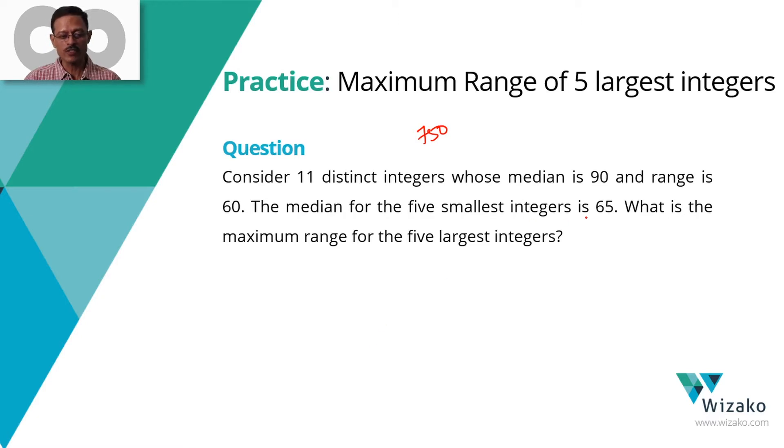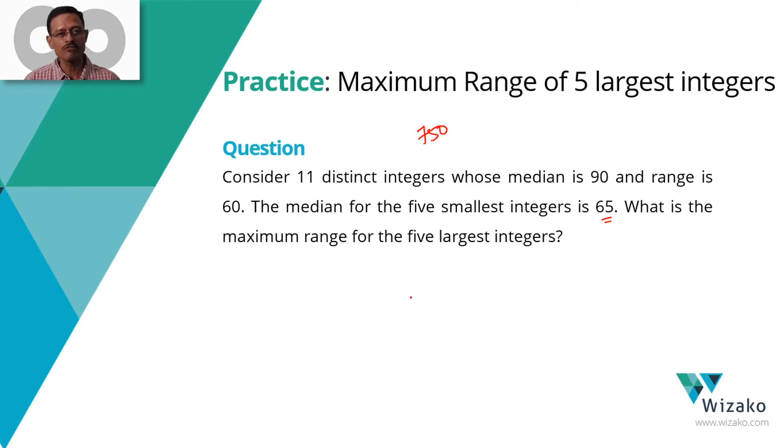The median for the five smallest integers is 65. What we need to find out is the maximum range for the five largest integers.